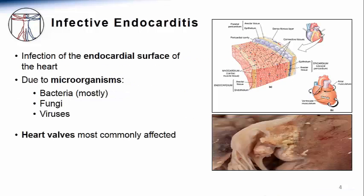The term infective endocarditis refers to infection of the endocardial surface of the heart. The diagram on the right shows the layers of the heart, starting from the outermost pericardium, in which the cells are pictured in purple, to the epicardium, myocardium, and finally the endocardium, which is the innermost layer of the heart.